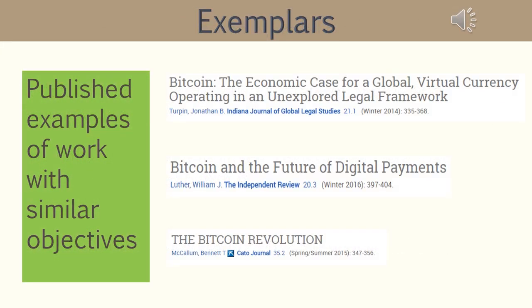When we refer to scholarly writing or any type of writing, it is not necessary to reinvent the wheel, as the saying goes. Exemplars are basically published examples of work with similar objectives. If you are going to write a scholarly work, it is important that you find examples similar to what you're trying to write. You're not going to copy the work — every person has their own perspective — but you need to find papers similar to what you're going to do so you have an idea of how to actually structure your work.